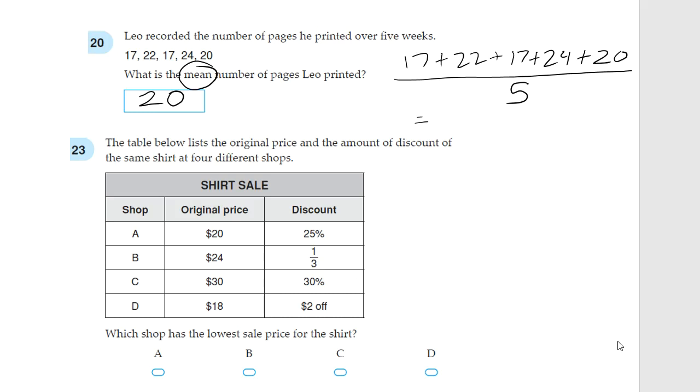Question 23. The table below lists the original price and the amount of discount of the same shirt at 4 different shops. Which shop has the lowest sale price for the shirt? 25% off something which costs $20 originally. So, in the end, that means you have to pay 75% of the original price. Another way of doing that would be 0.75 times 20. And, if you can do this on the calculator, you will get 15. So, the answer is $15.